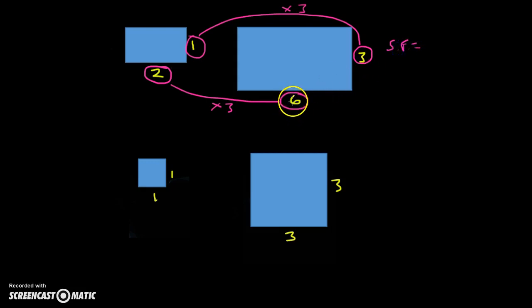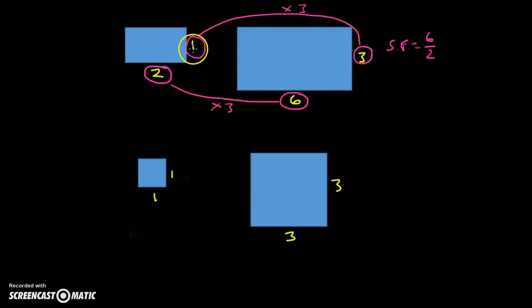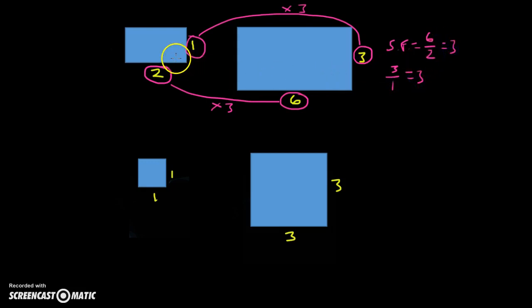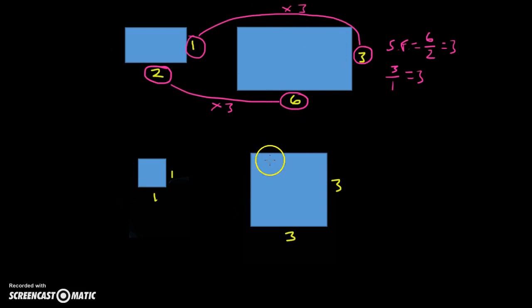We could have found the scale factor by either doing six over two — the ratio of those corresponding lengths — or the ratio of those corresponding lengths. Both of those equal three. So in other words, the lengths from this rectangle to that rectangle have all been enlarged by three, or multiplied by three.